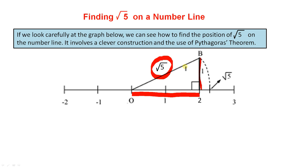We open our compass to the length of the hypotenuse. We draw the dotted line around here and this point here is the square root of five.